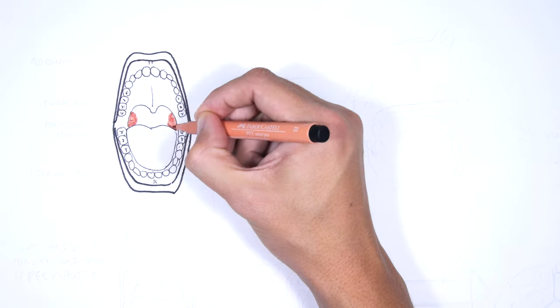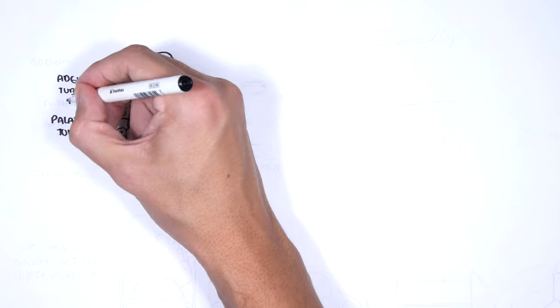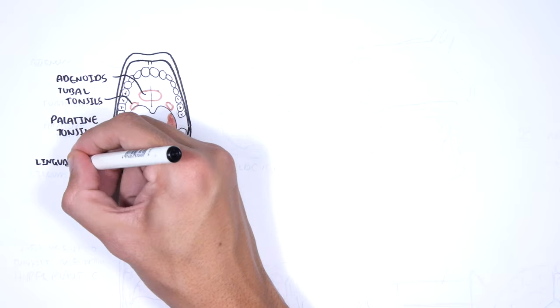The tonsils are part of what is called Waldeyer's ring. Generally when talking about the tonsils we are talking about the palatine tonsils situated on both sides of the throat. There are also adenoids, tubal tonsils and lingual tonsils which make up Waldeyer's ring.